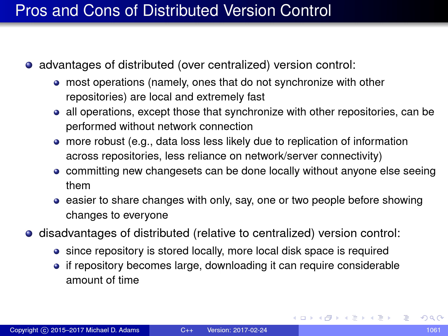Another benefit of distributed version control is that it can be used for purely local changes. For example, a developer might want to use version control for all stages of their work but not publish the intermediate stages to others. Also, a developer might want to use version control for experimental work without being forced to make that work available to others. Another advantage is that changes can be easily shared with only select individuals before making them available to everyone, which can sometimes be desirable.